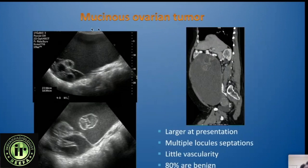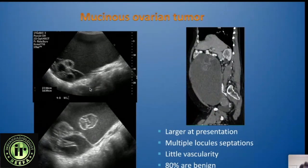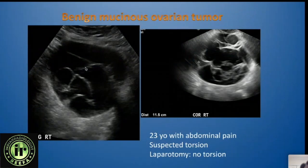Mucinous ovarian tumors tend to be very large at presentation — in this case, nearly 24 centimeters. They may have internal echoes, multiple locules and septations, and little vascularity. Although mucinous cystadenocarcinoma exists, the vast majority — about 80 percent — are benign. This next example shows a very complex appearance in a young patient where we suspected ovarian torsion, but at laparotomy she had a benign mucinous ovarian tumor.